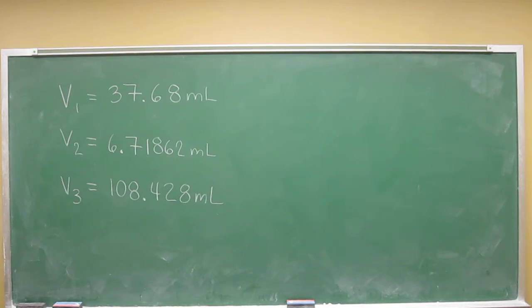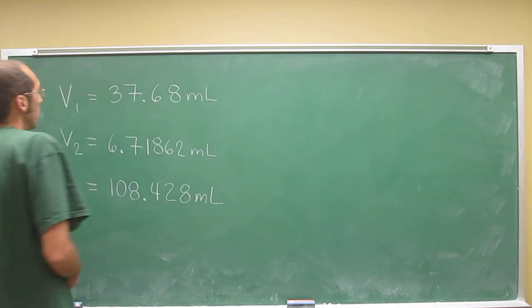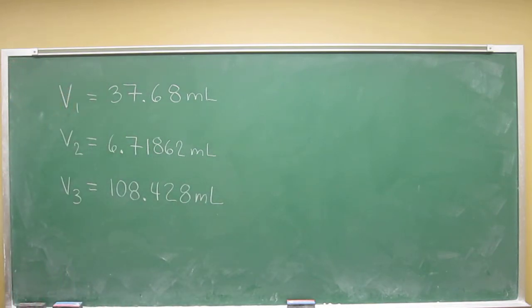Let's learn the rules now for addition when dealing with significant figures. So say we were given these three volume measurements: volume 1 is 37.68 mL, volume 2 is 6.71862 mL, and volume 3 is 108.428 mL.